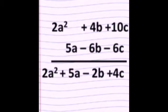In this example, 2a² plus 4b plus 10c. In the next row, 5a minus 6b minus 6c. So we arrange in column method like terms. Then we solve plus 10c minus 6c. Both signs are different, so we subtract smaller digit by the greater digit. From the greater digit, 10 minus 6 is 4c. We write the sign with the greater digit. 10c is greater, so we write the positive sign plus 4c.